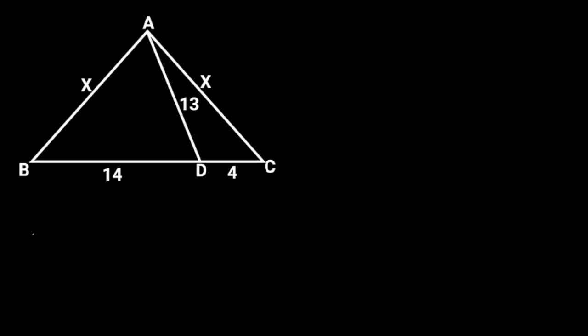This figure is a triangle ABC with a line segment AD. If AB is equal to BC, which is equal to X. AD is equal to 13 units. BD is equal to 14 units. And CD is equal to 4 units. Find the value of X.